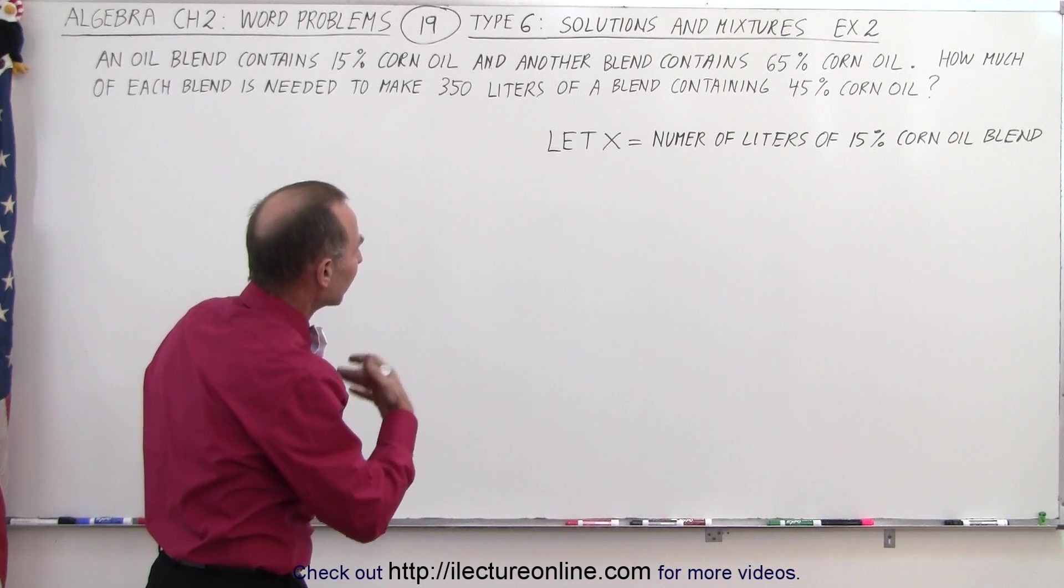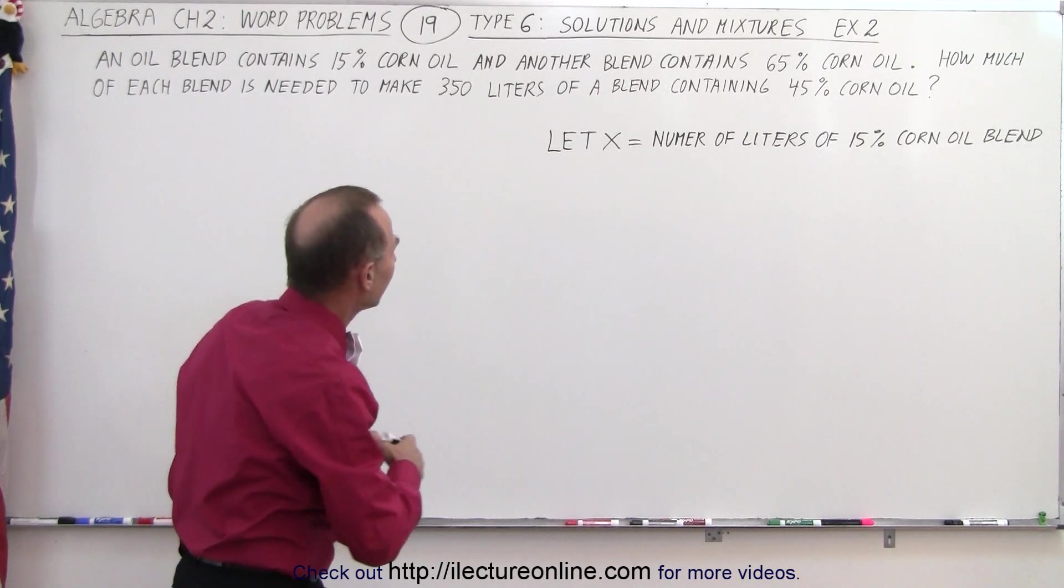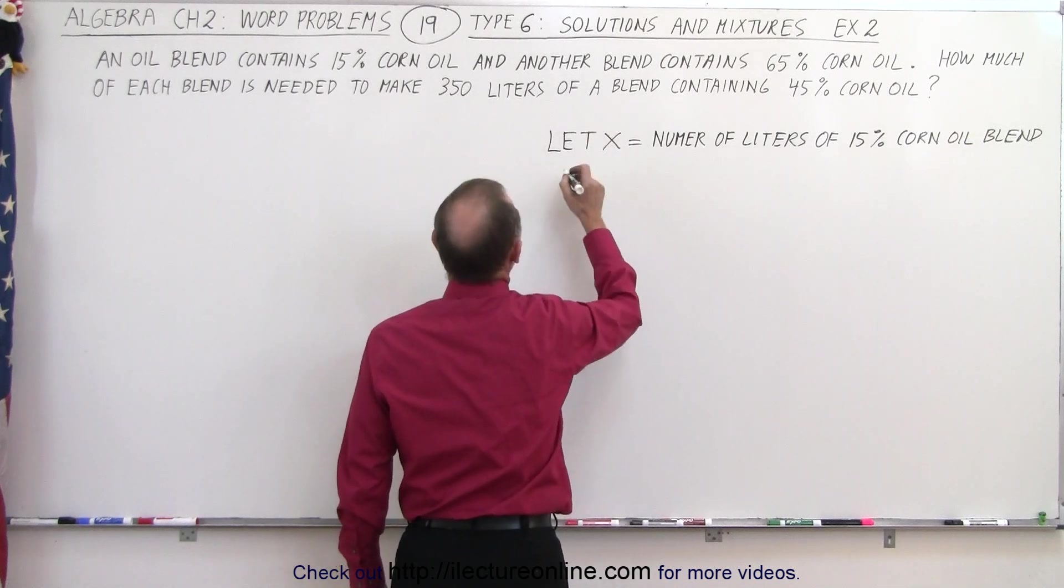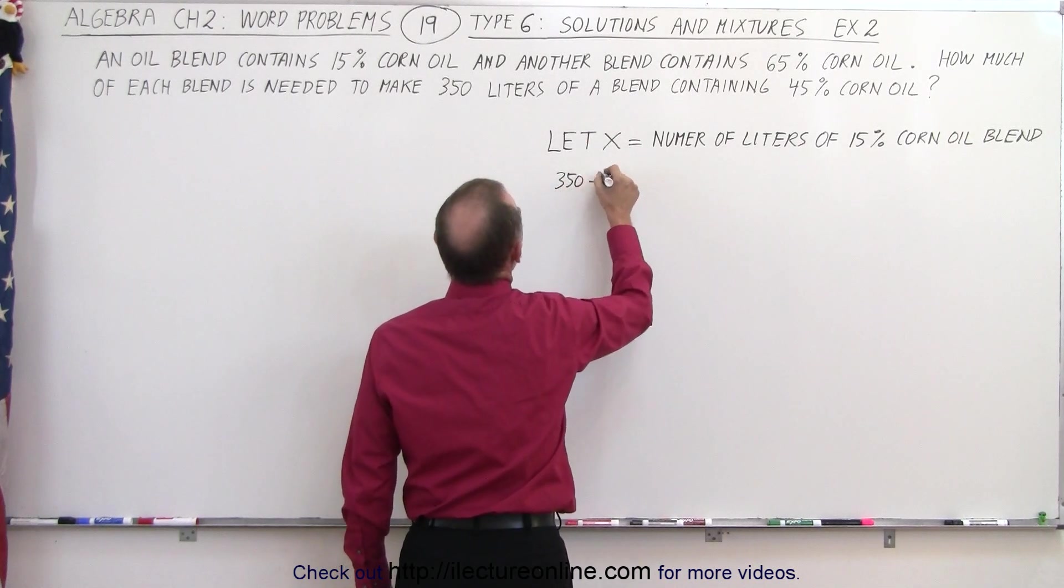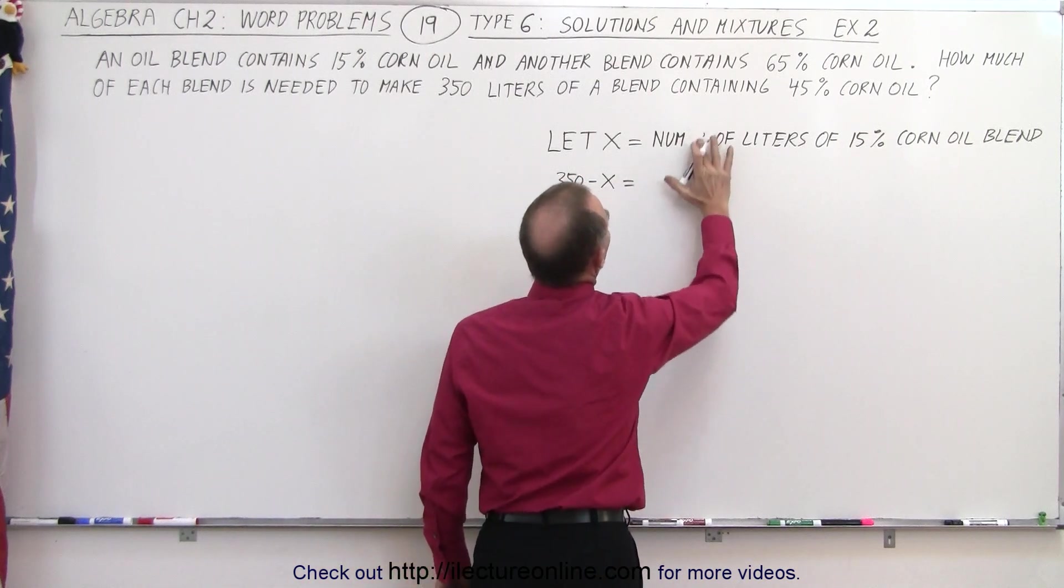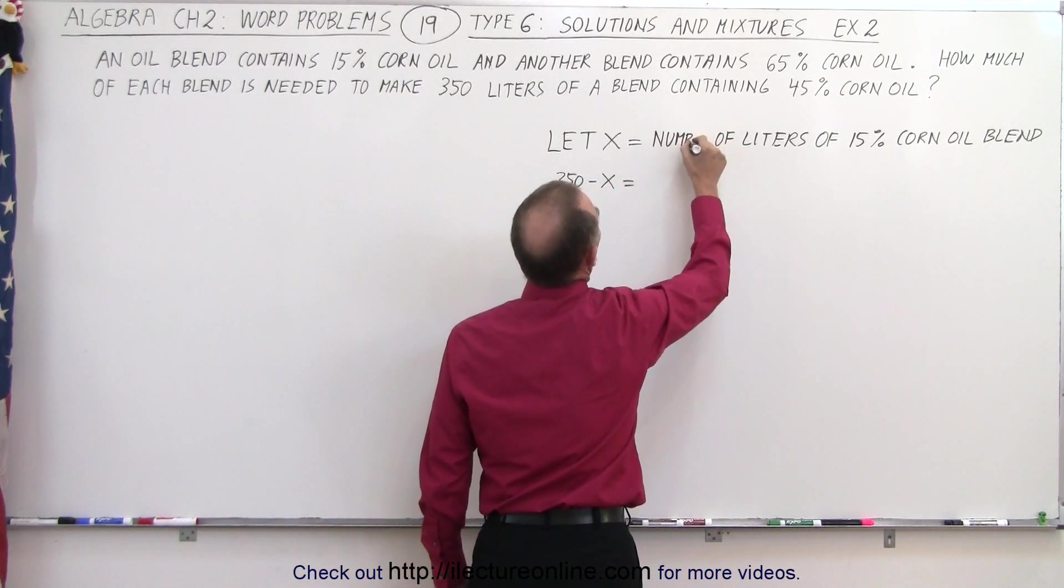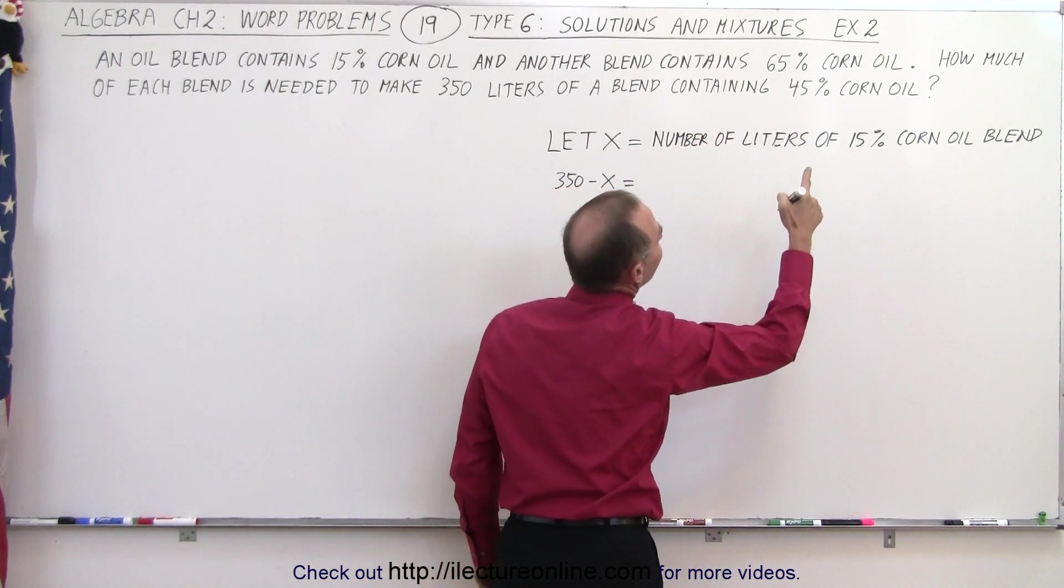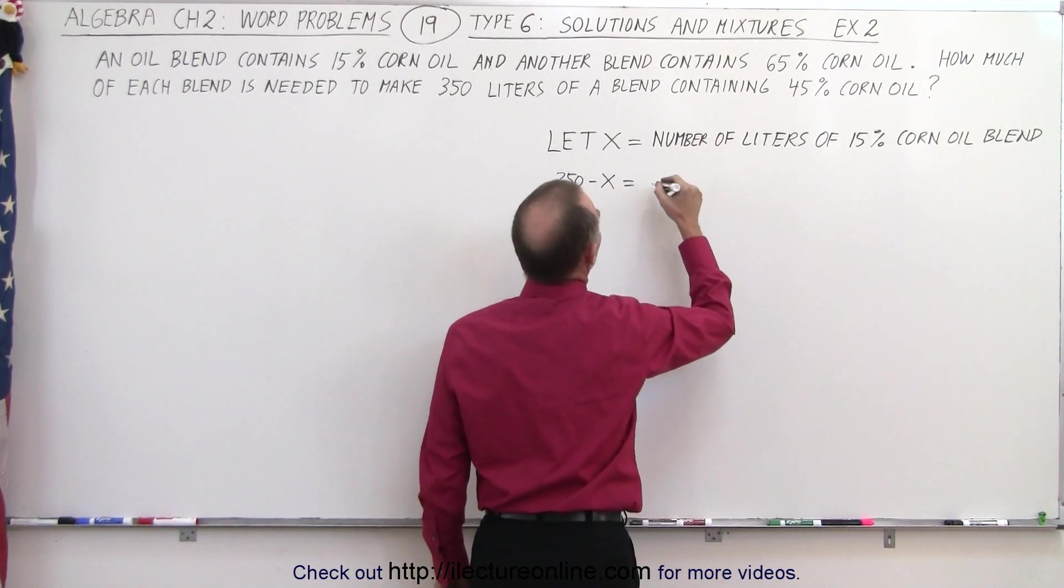Now we need to express the amount of liters we have of the other blend. So in this case, the total will be 350. If we subtract x from that, we get 350 minus x, which is going to be equal to the number of liters of the 65% corn oil blend.